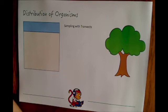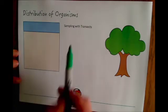In the previous video we talked about measuring the distribution of organisms by doing random sampling with quadrats. Here we're going to talk about something different: transects.